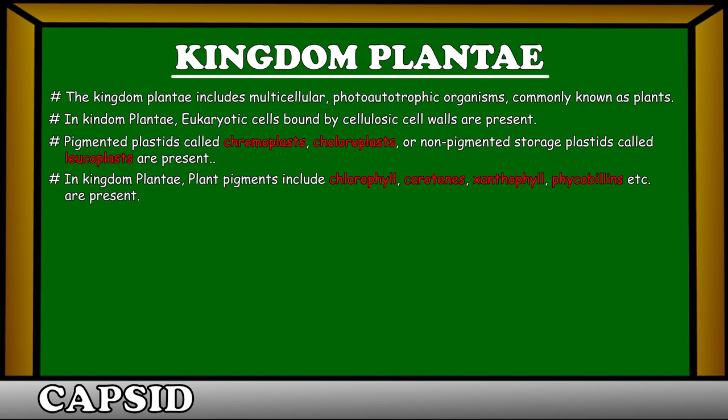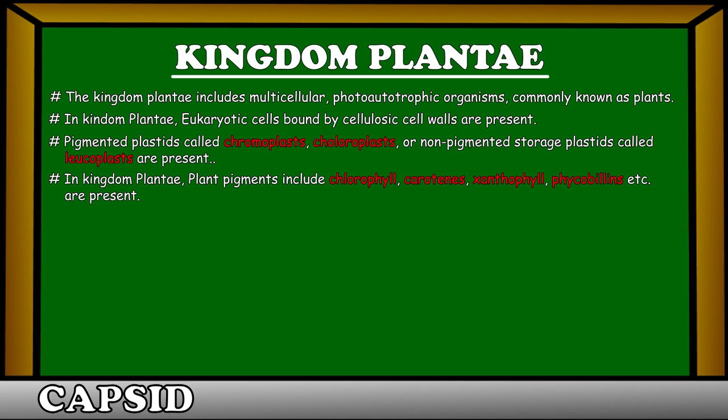In Kingdom Plantae, plant pigments include chlorophyll, carotenes, xanthophyll, phycobalins, etc.